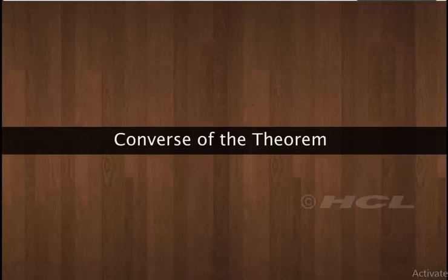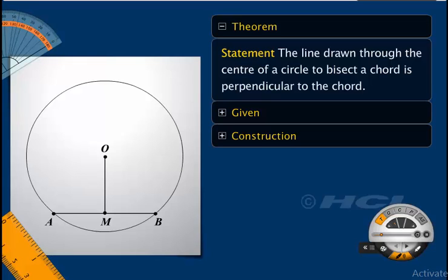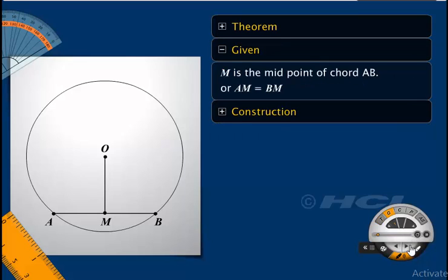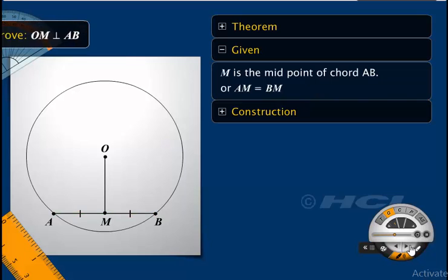Let's now see the converse of the theorem. The converse can be stated as: the line drawn through the center of a circle to bisect a chord is perpendicular to the chord. We are given that OM bisects chord AB, which means that M is the midpoint of chord AB, or AM equals BM. To prove that OM is perpendicular to AB, we need to prove that angles OMA and OMB are equal to 90 degrees.